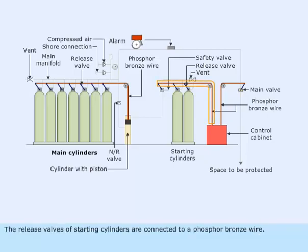The release valves of starting cylinders are connected to a phosphor bronze wire. The free end of the wire terminates inside a control cabinet.